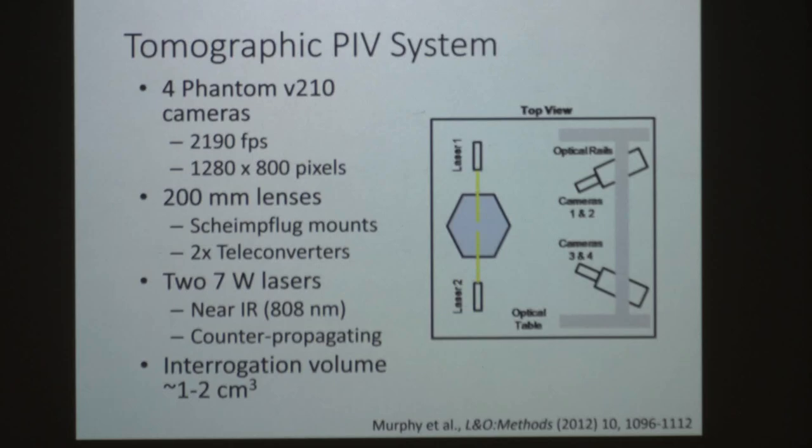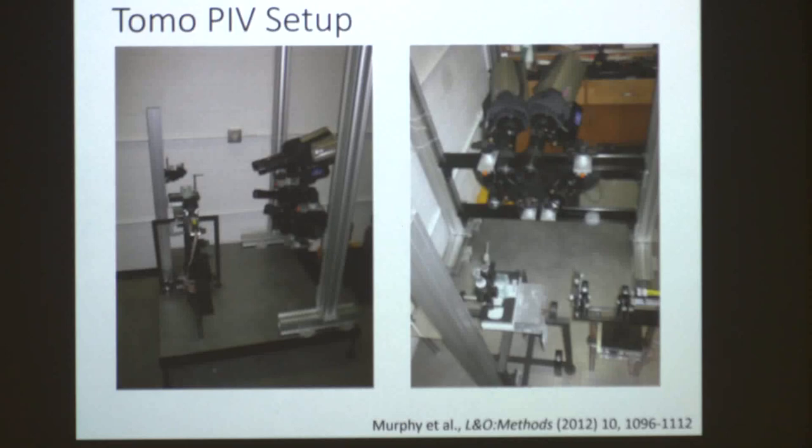The end result was an interrogation volume of about one to two cubic centimeters. The physical setup included a large optical table with four cameras mounted on rails, one of our lasers firing toward the aquarium. We had animals kindly shipped to us from Bill Peterson in Oregon and used them at Georgia Tech in one of the cold rooms.